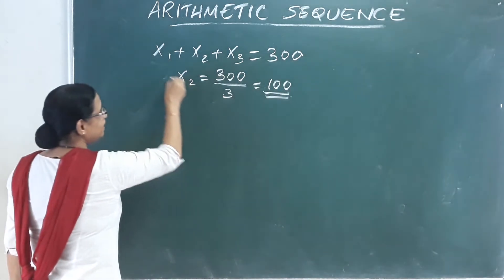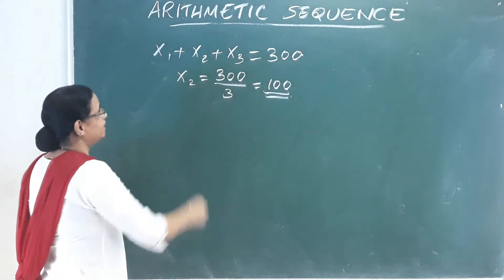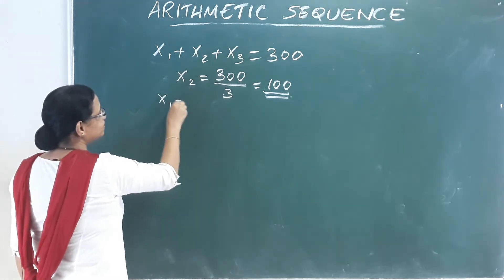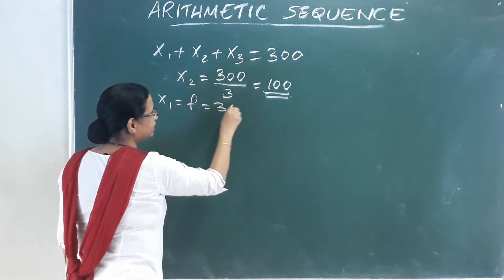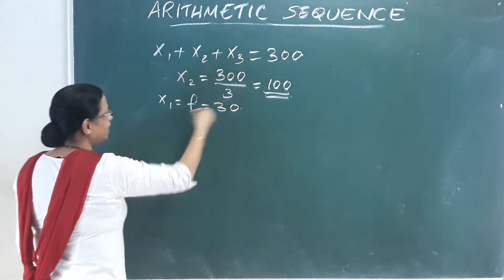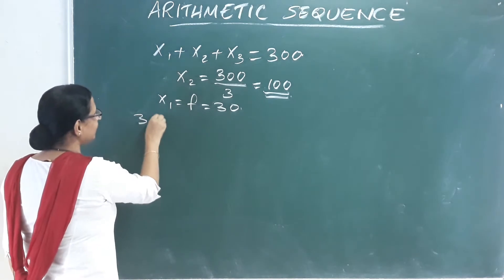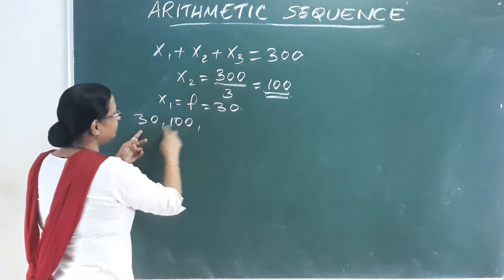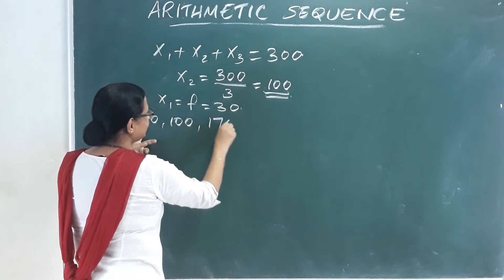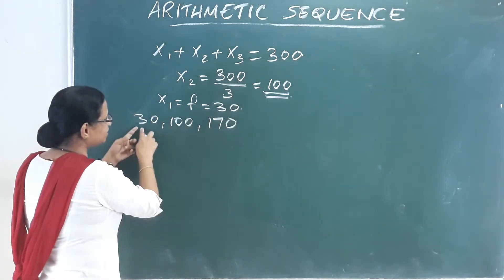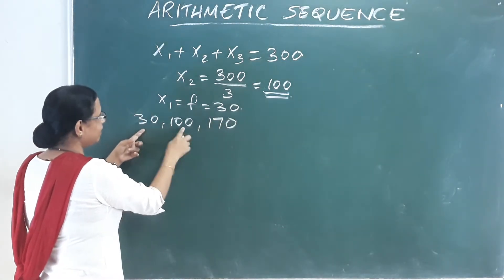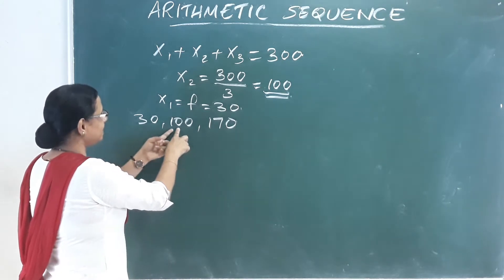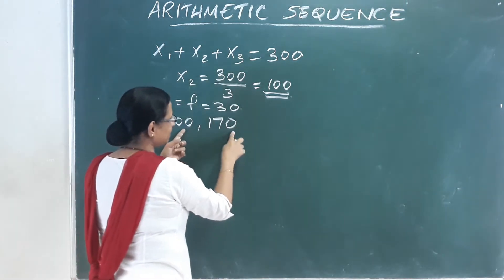The first term x1 is equal to f, which is equal to 30. That means the three terms are: 30, 100. Then the next term is 170, because the common difference is 100 minus 30, which is 70. So 70 is added each time.